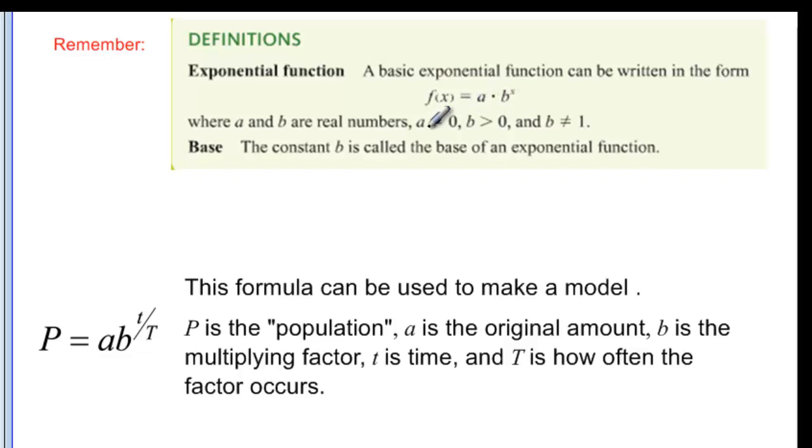a can't be equal to zero, b has to be greater than zero and not equal to one, and that constant b is going to be the factor that we see being multiplied over and over again.